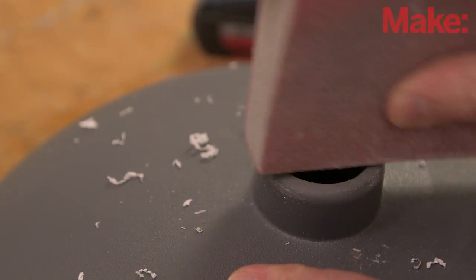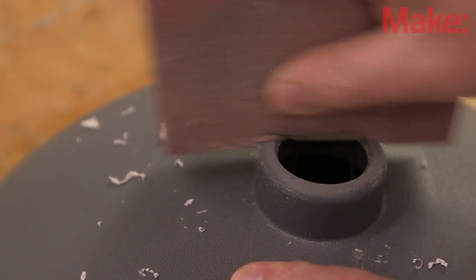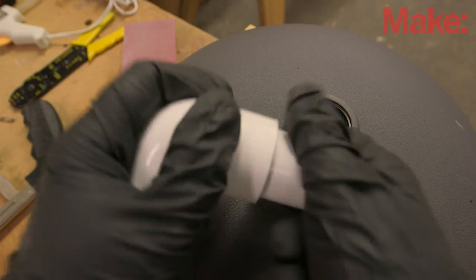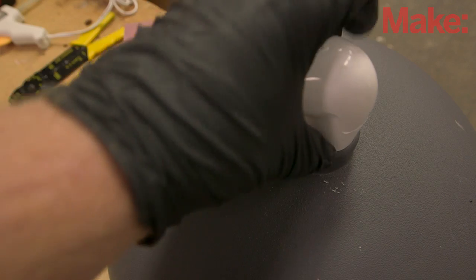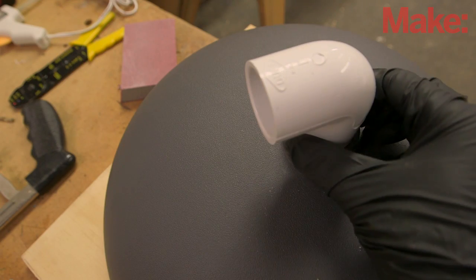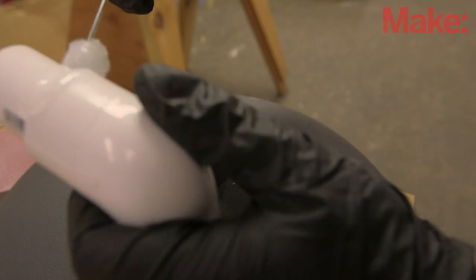Now you'll construct the parabolic reflector. Lightly sand the hole in the squirrel baffle and the mating surface of the PVC elbow. Place the 90-degree PVC elbow in the baffle hole, verify the PVC sits level on the baffle, and glue it into place.